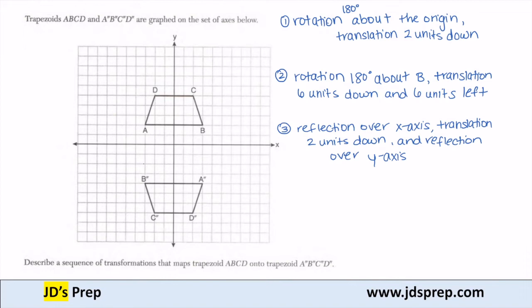So point A would go here, A'. B would get reflected — that would give me that point there, B'. C would get reflected — 1, 2, 3 — right there, C'. And D would get reflected there to D'. Okay, so that's my reflection over the x-axis.